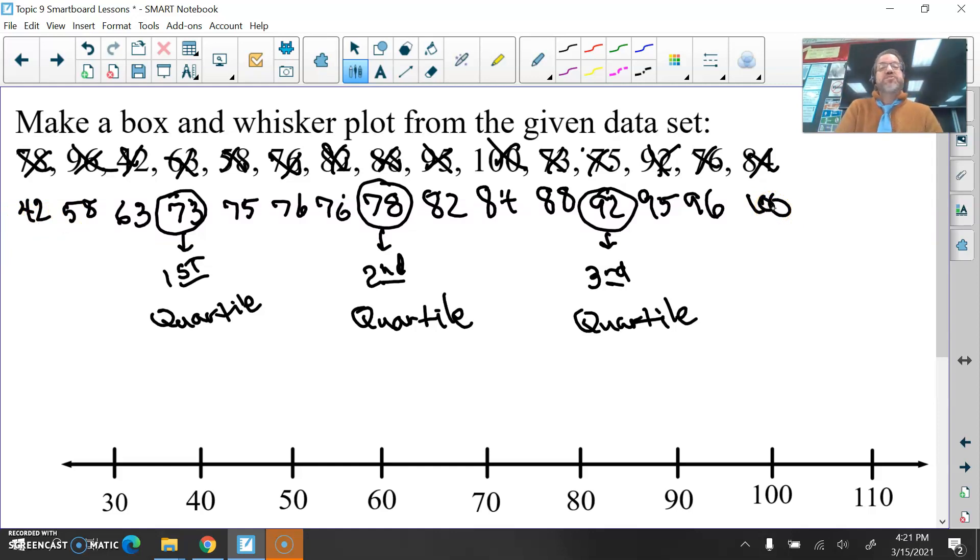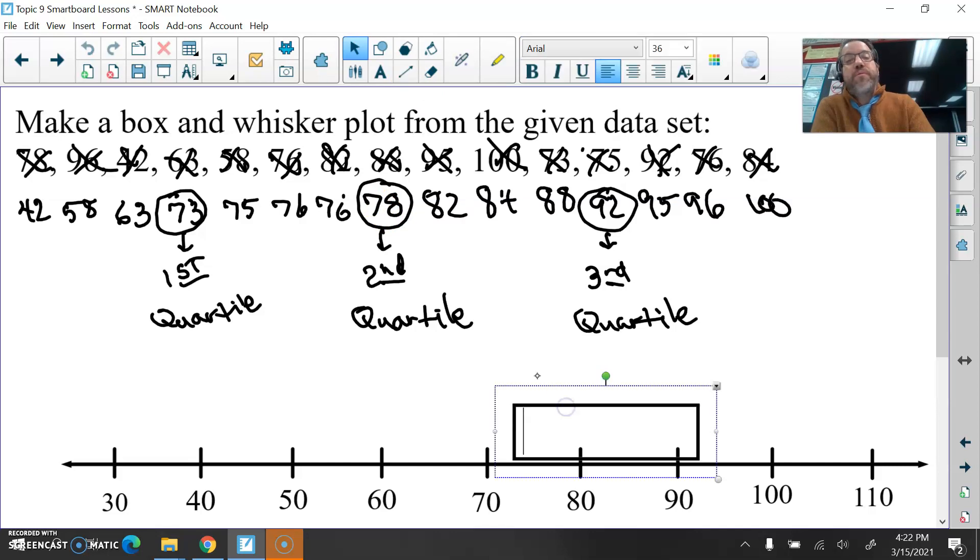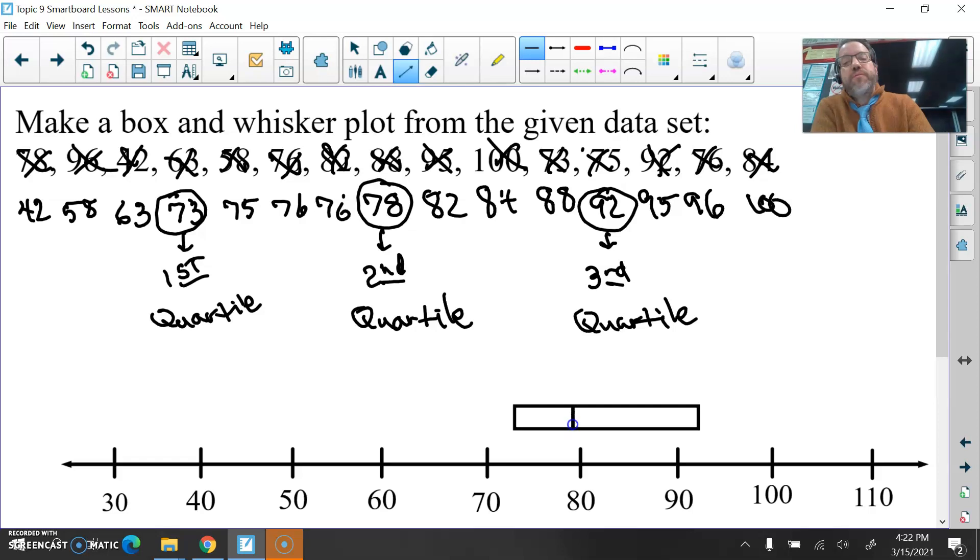All right. So now when I'm making my box and whisker plot, I would strongly encourage you to use a ruler. Any kind of straight edge would be fine, but you want these to look nice. I don't want these to be freehand and all messy. All right, we're better than that. We don't need to make them all messy like that. So what I have here is my box is going to be from the first quartile to the third quartile, so from 73 up to 92. And then my second quartile is at 78, so I'll draw that in here right about here.